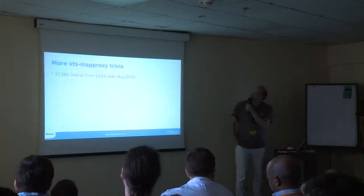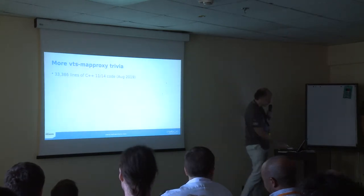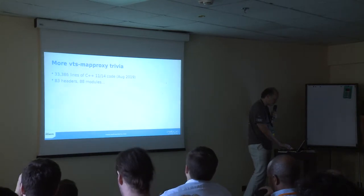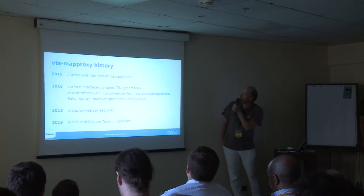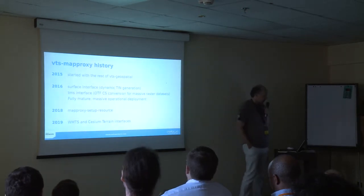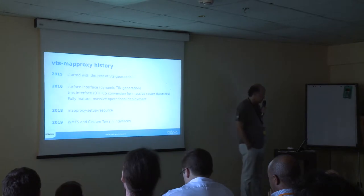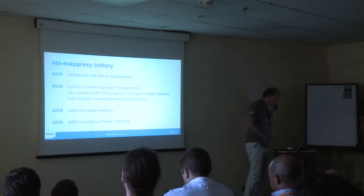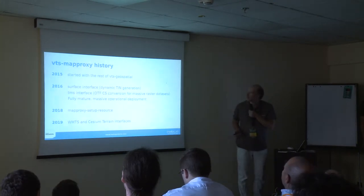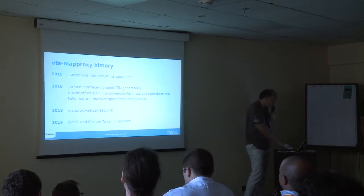Some interesting trivia: it currently has over 33,000 lines of C++ code — a moderate-sized but quite lean project. It's three headers, 88 modules. We started VTS MapProxy in 2015. By 2016, it was a fully mature system in massive operational deployment, providing the surface interface for dynamic TMS generation and on-the-fly coordinate system conversion for massive raster datasets — actually running a website attracting something like half a million users per day.